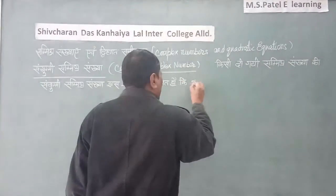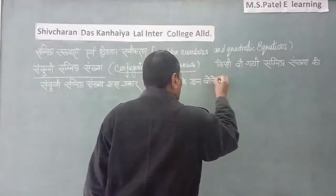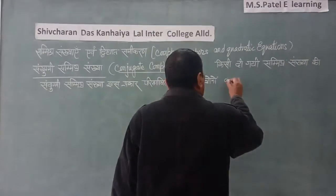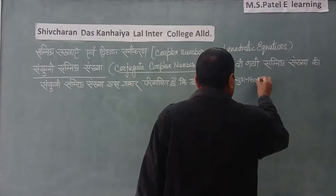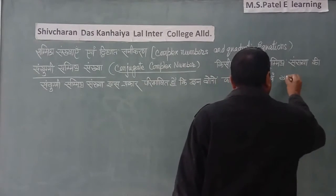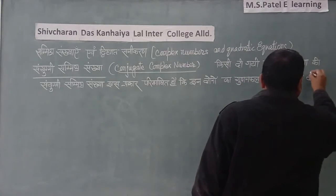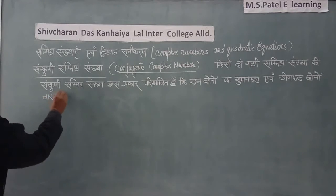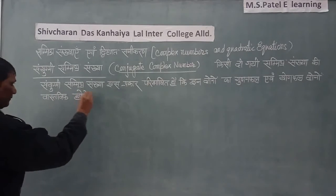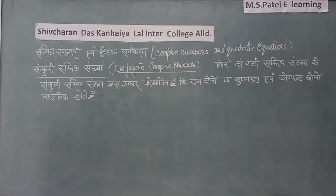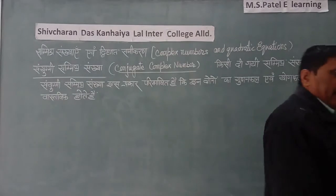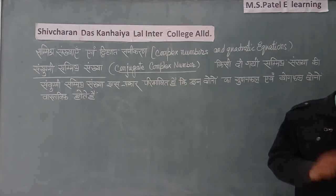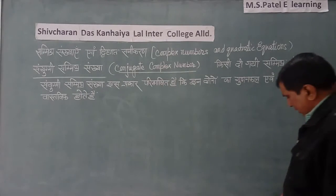Paribasha kehti hai ki jo samishra sankhya di gayi hai aur uski sanyugmi — in dono ka gulan phal evam yog phal dono vastavik hone chahiye. Matlab, agar koi samishra sankhya hai aur doosri uski sanyugmi hai, toh unka product aur sum dono real hona chahiye.